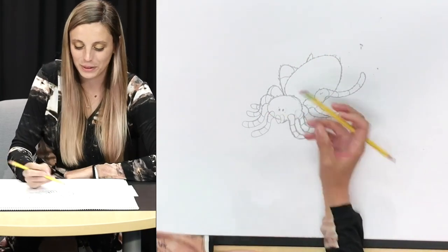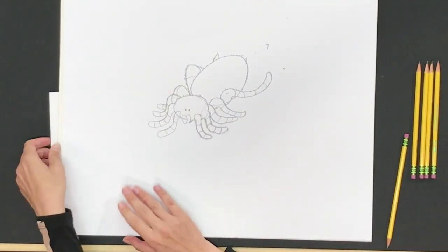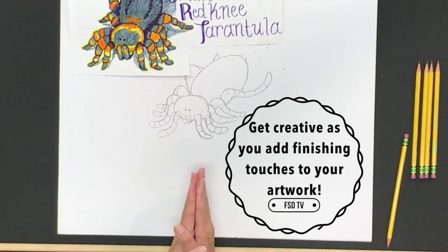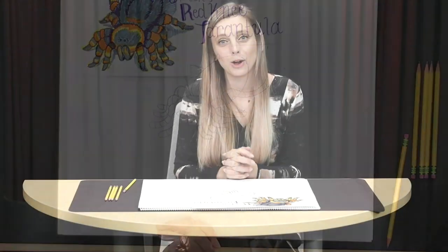And there you have it, one Smith's red knee tarantula. Here's the picture that I drew earlier to give you an idea of where to start with coloring if you decide to do that. Thank you so much Fullerton Scholars for joining me today. I hope you enjoyed learning as much about this amazing animal as I did. Bye.